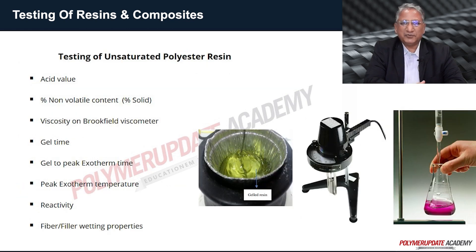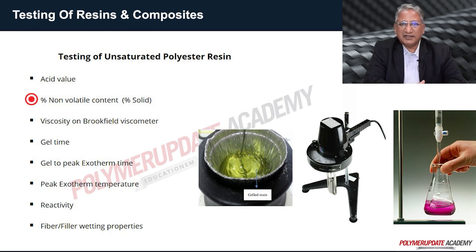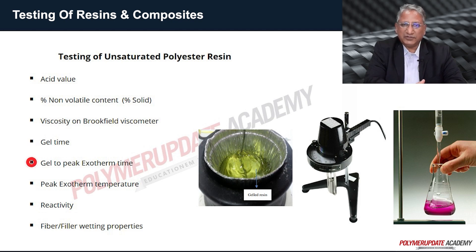For unsaturated polyester resin testing, acid value is determined first, followed by percentage non-volatile content (percentage solids). Viscosity is measured on a Brookfield viscometer at constant temperature. Gel time, gel to peak exotherm time, and peak exotherm temperature are noted. Reactivity, curing characteristics, and fiber and filler wetting properties are also determined.